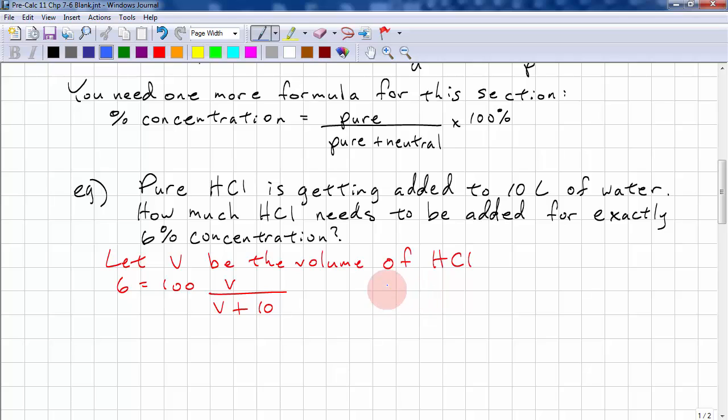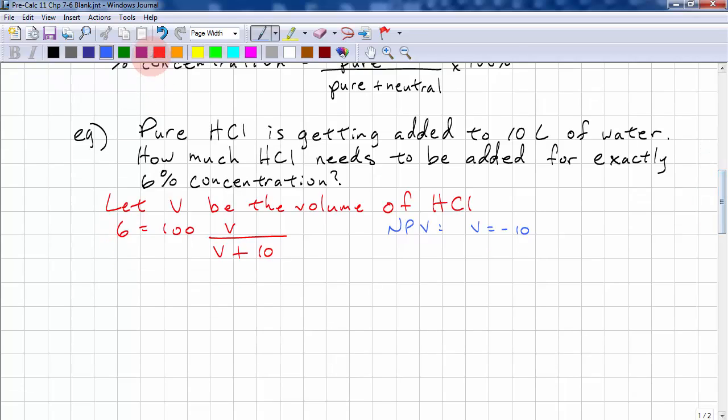So our NPV is v equals negative 10. We don't have to worry about this because we can't have negative volume. But we should have it there so that you can check. So 6 over 100 equals v over v plus 10.